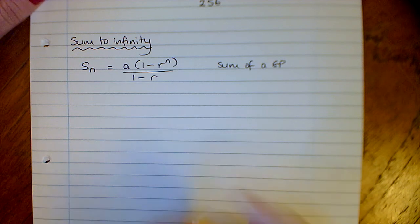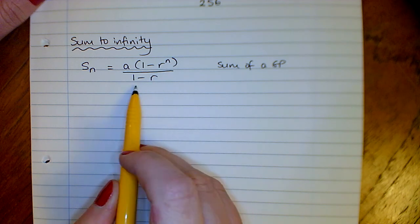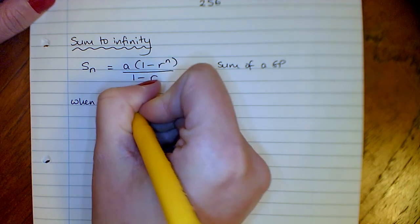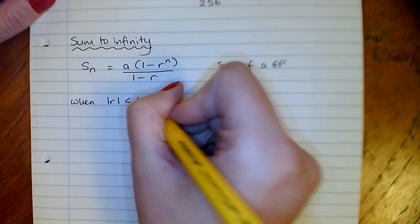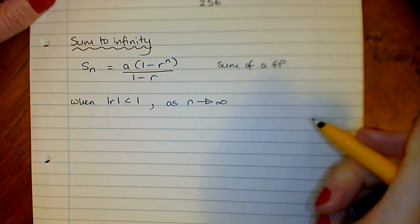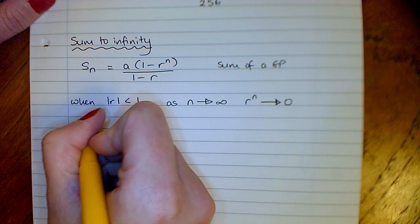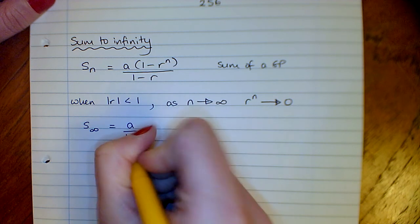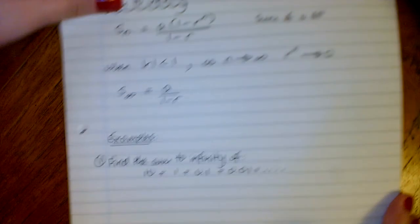Within GP, we've got an extra bit called sum to infinity. If we look at the sum of the GP that we proved as A times (1 minus R to the power of N) over (1 minus R), when the modulus of R is less than 1, when R is a fraction between 1 and minus 1, as N gets bigger and bigger, as N tends to infinity, R to the power of N goes towards 0. So what happens is we get this sum to infinity, we get 1 minus 0 at the top there, which just means we've got A over (1 minus R). This is called the sum to infinity.